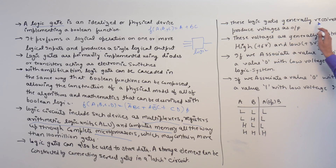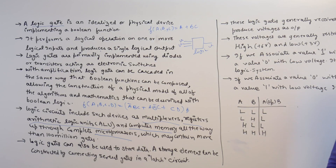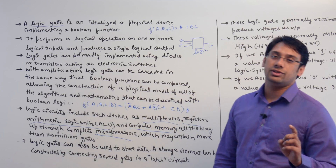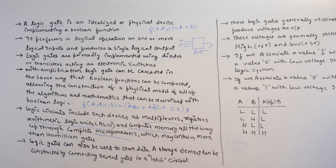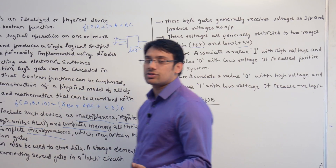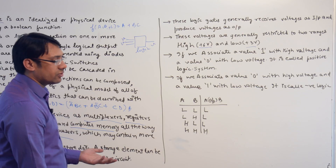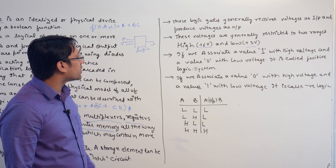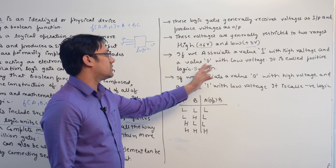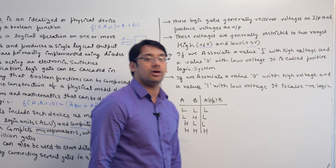Logic gates receive voltage inputs and produce voltage outputs. These voltages are represented by two values: high and low. The exact values are not strictly specified, but for example, high voltage might be +6V and low voltage +3V. If we associate the value 1 with high voltage and 0 with low voltage, it is called a positive logic system. If we associate 0 with high voltage and 1 with low voltage, it is called a negative logic system.